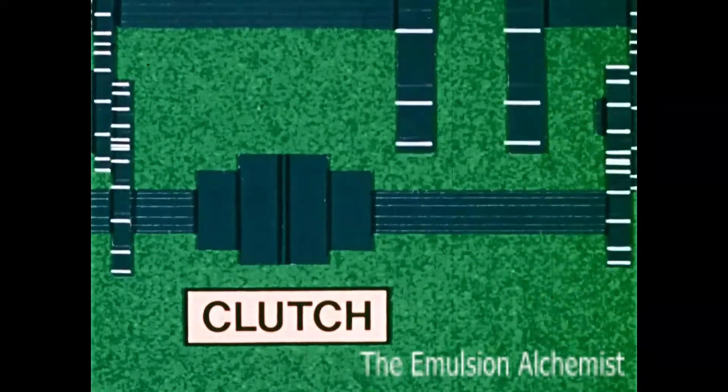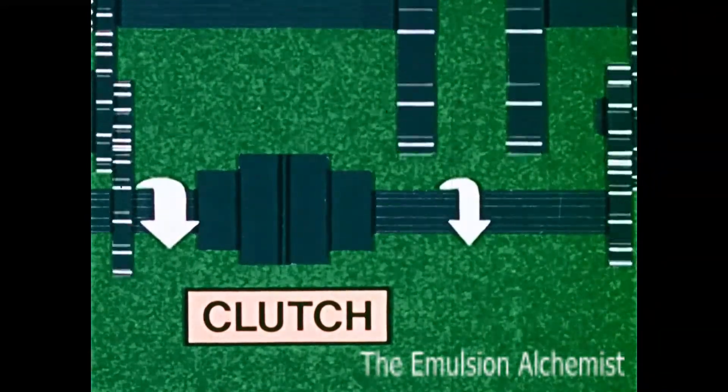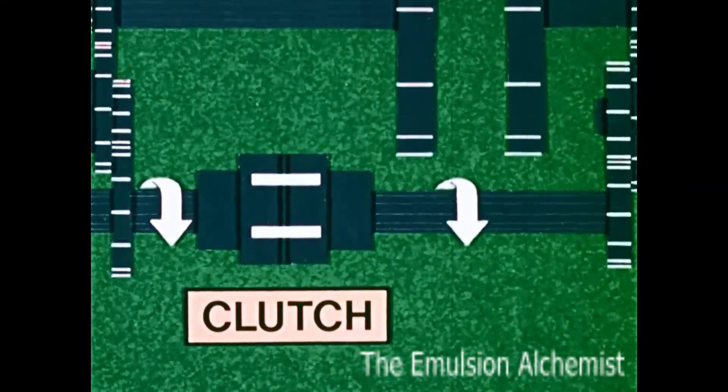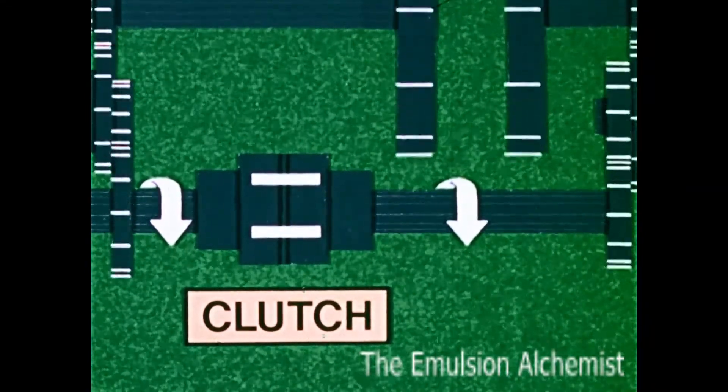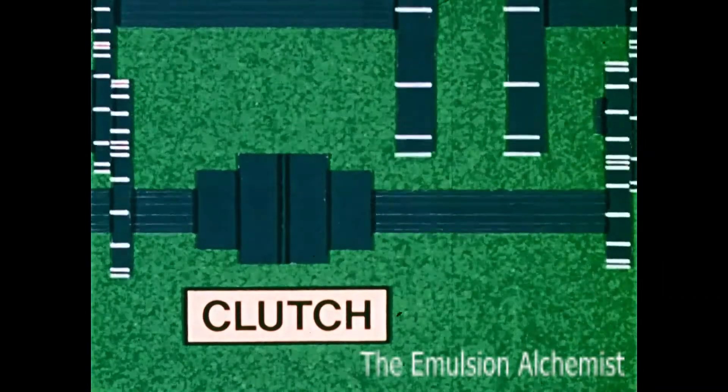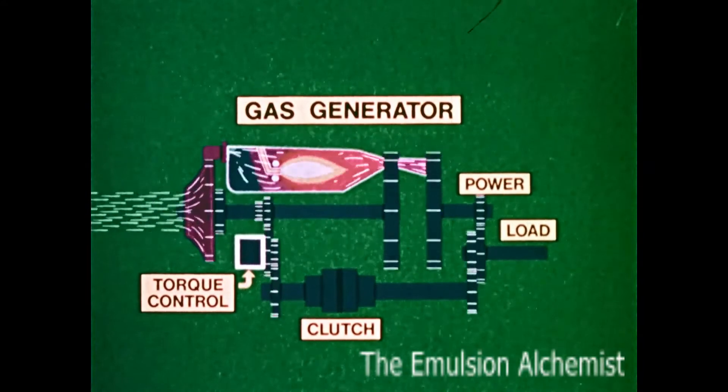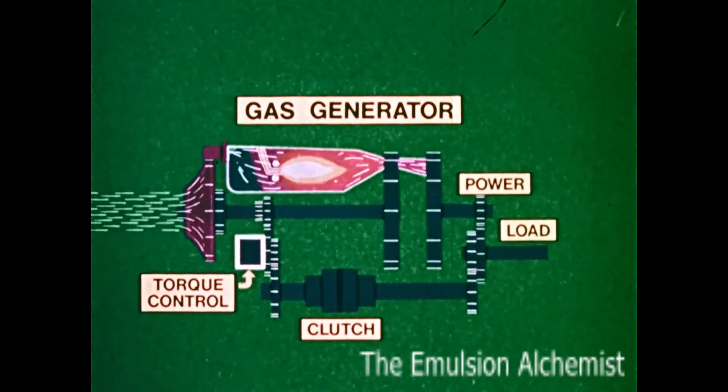The clutch can be operated partially engaged, that is, with slippage, or fully engaged, providing transfer of mechanical energy from the gas generator to the load. The torque control responds to load changes, and adjusts the clutch settings for maximum efficiency.